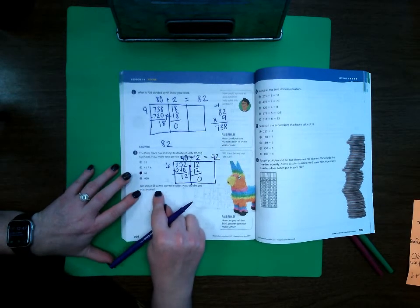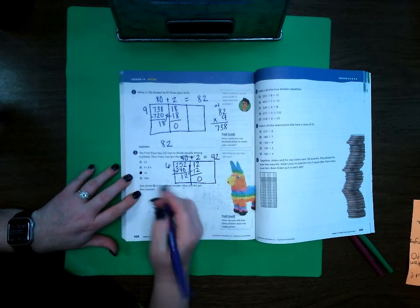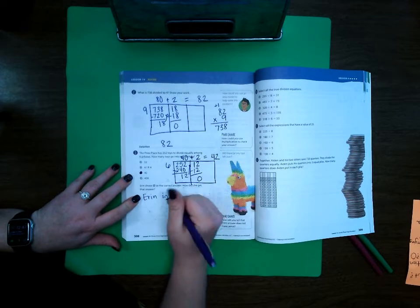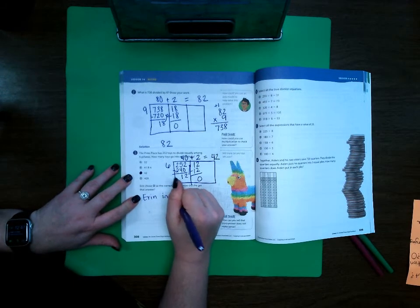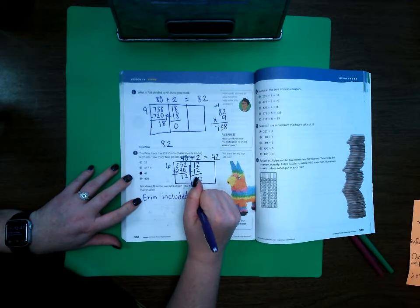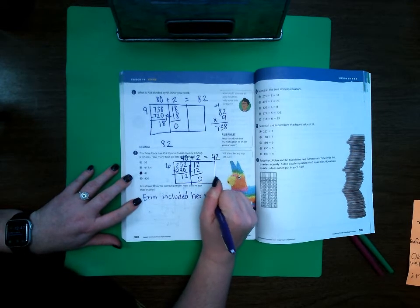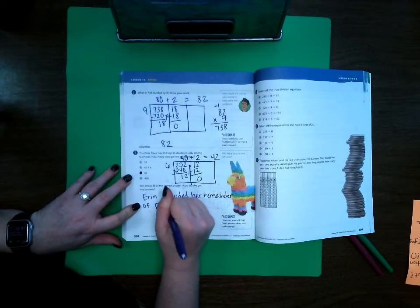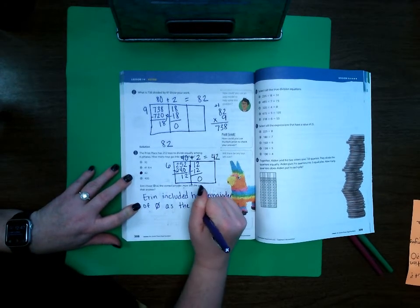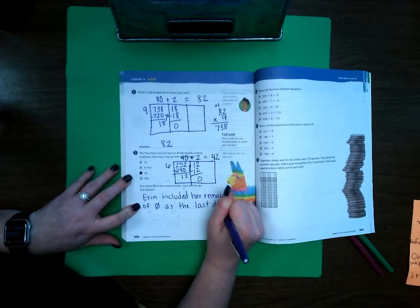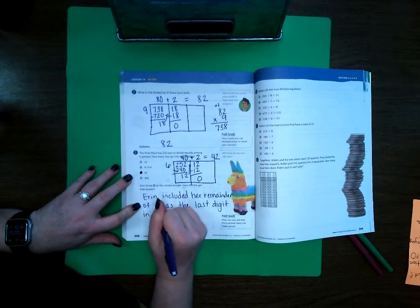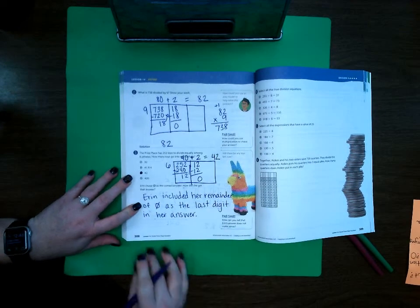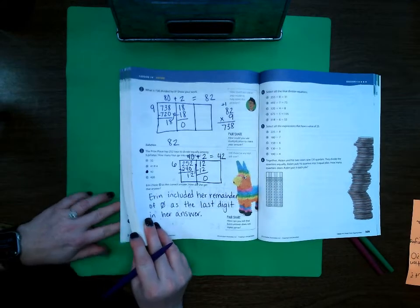So it's C. Aaron shows D as the correct answer, how did she get that answer? Well it looks like Aaron included her remainder to see. There's no remainder. Aaron included her remainder of 0 as the last digit in her answer. All right we're going to go ahead and move on to page 309.